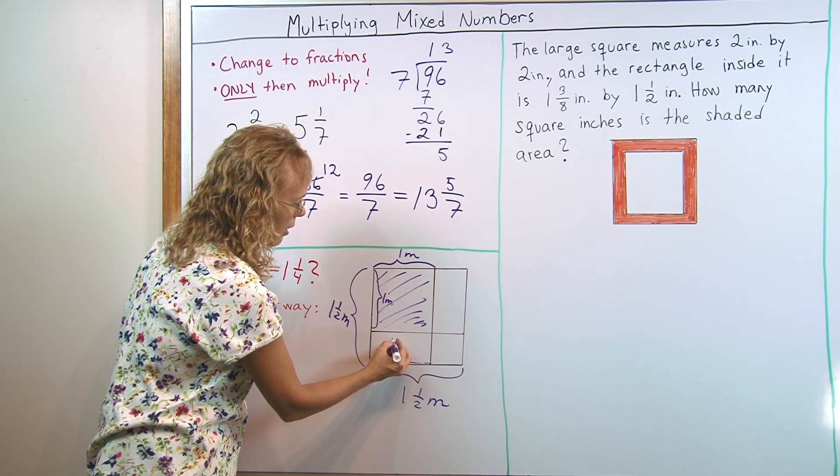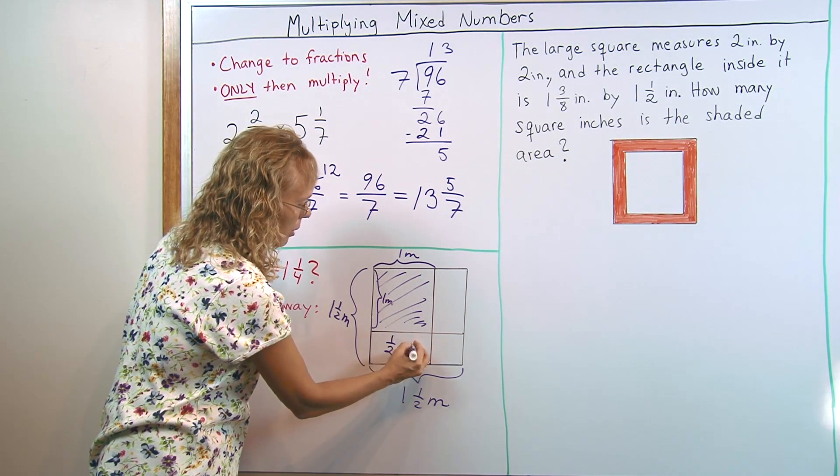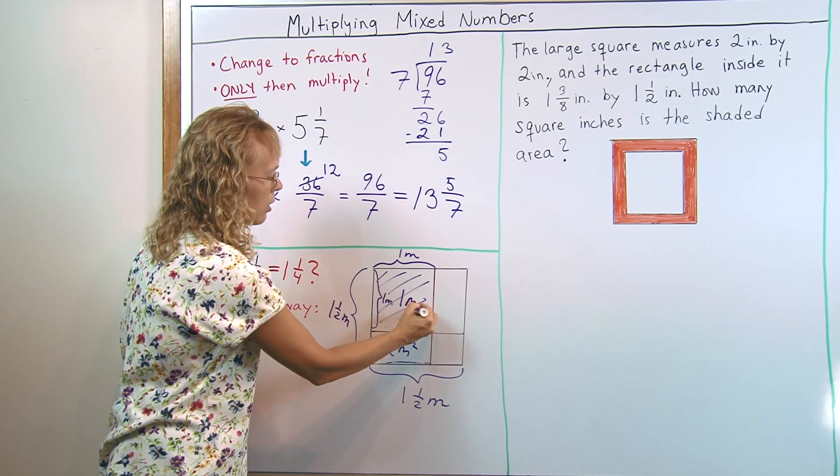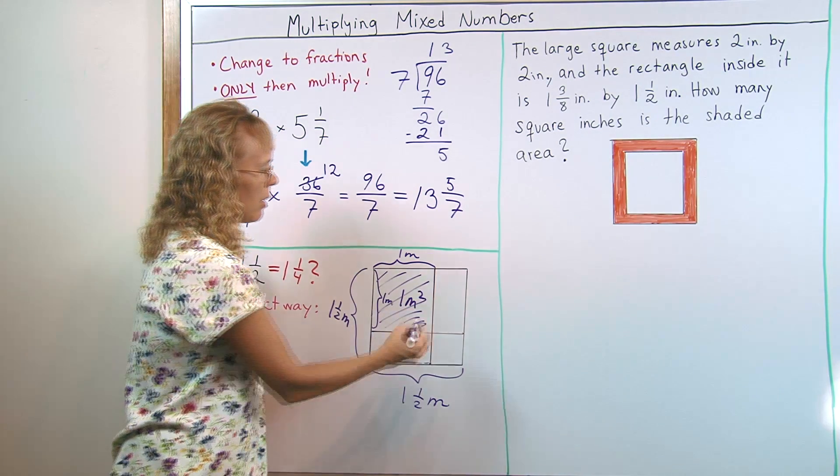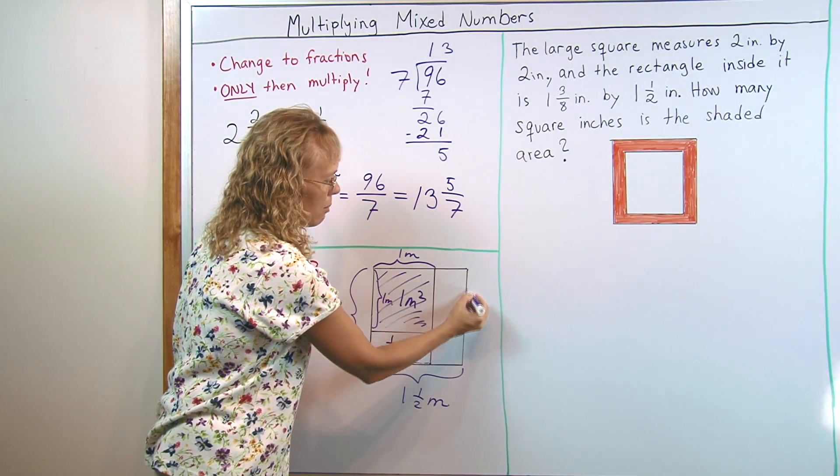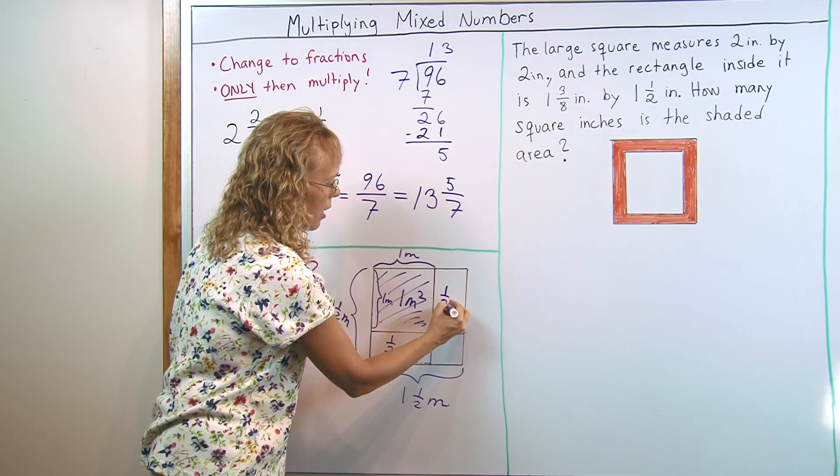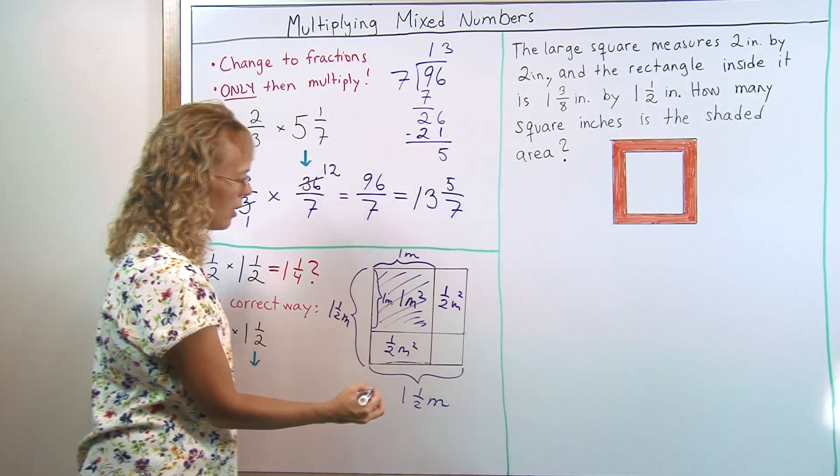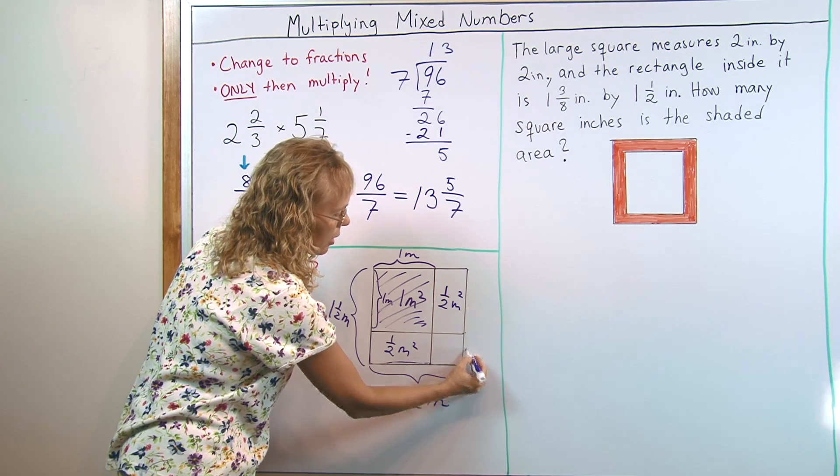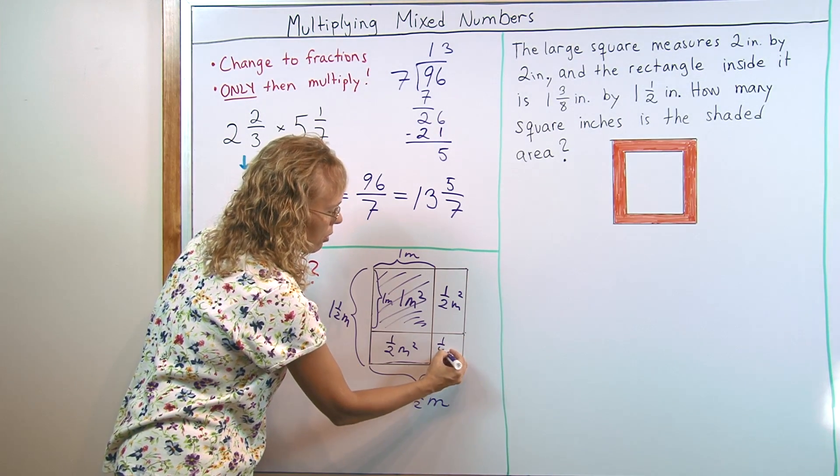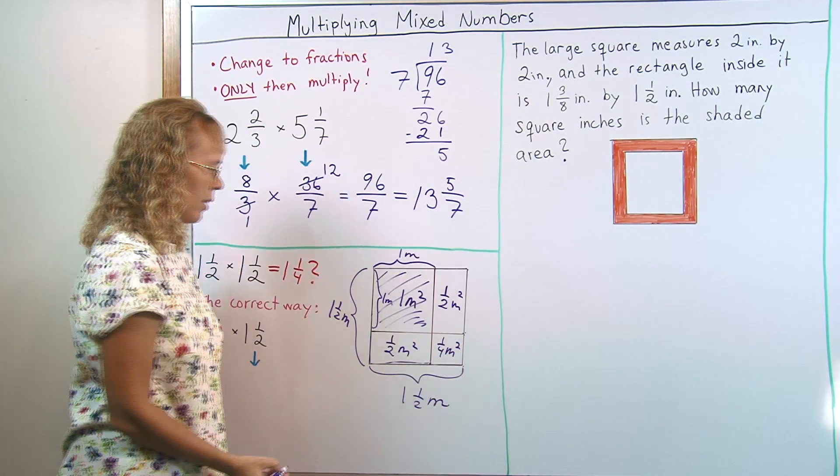So this area here is exactly half a square meter. Let me write it inside here. This is a square meter. This here is half a meter times a meter. So again, it is half a square meter. And then this area here is half a meter times half a meter, which is a fourth of a square meter.